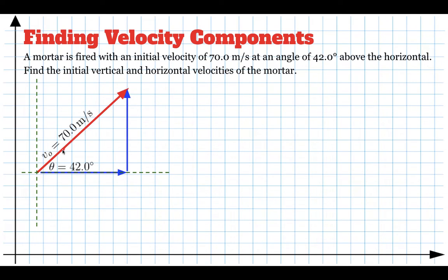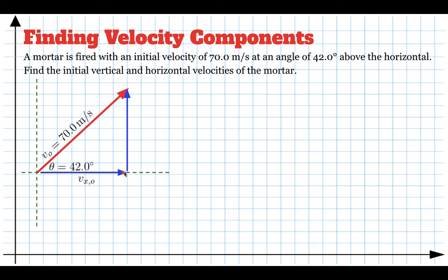To find what we call the components of the velocity — how fast it's moving to the right and how fast it's moving upwards — we have to use some trigonometry. We label this component the velocity in the x direction initially, which is how fast it's moving sideways, and this component the initial velocity in the y direction. Those two components tell us how fast it's moving at the beginning of the problem in the x and y directions.